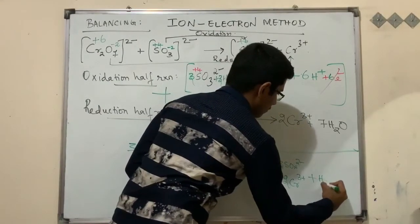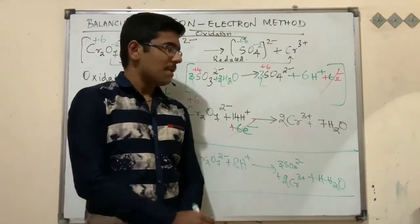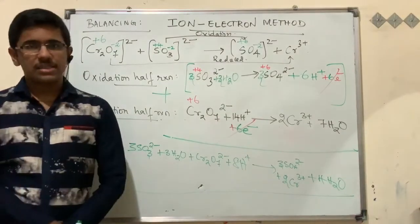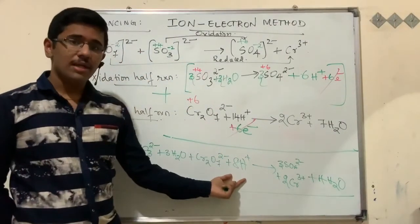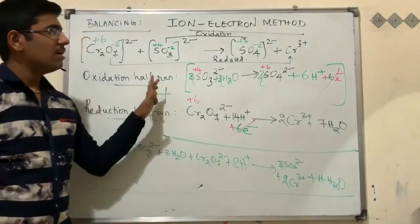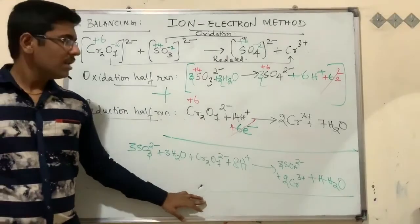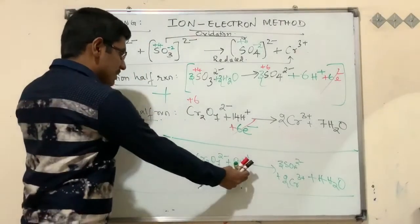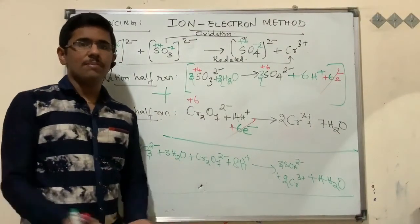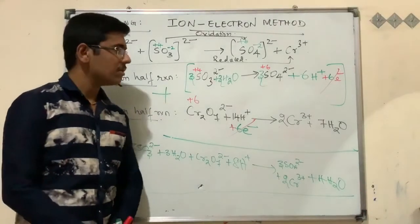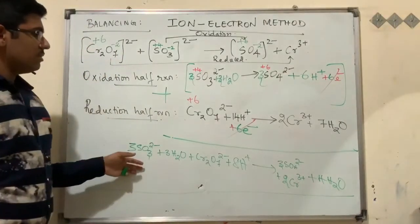This is the balanced ionic equation — the balanced redox reaction in ionic form. The presence of 8H⁺ indicates this reaction takes place in acidic medium. If you need to convert to basic medium, add as many OH⁻ ions as there are H⁺ ions to both sides. However, for this particular reaction, it must remain in acidic medium.